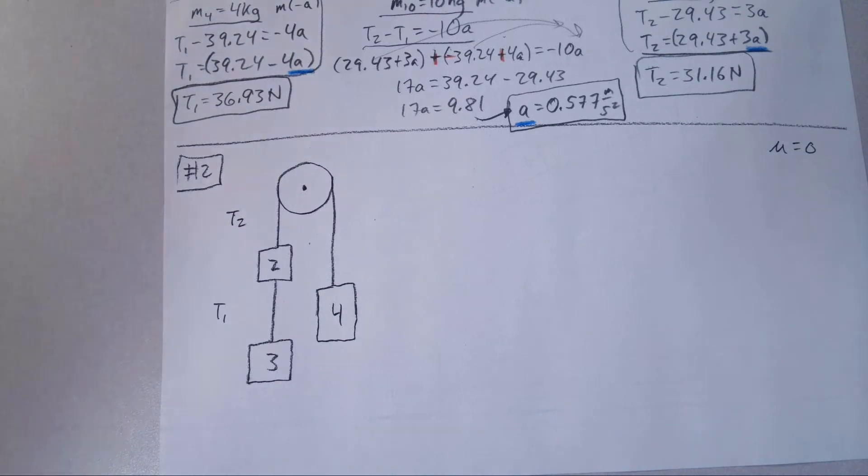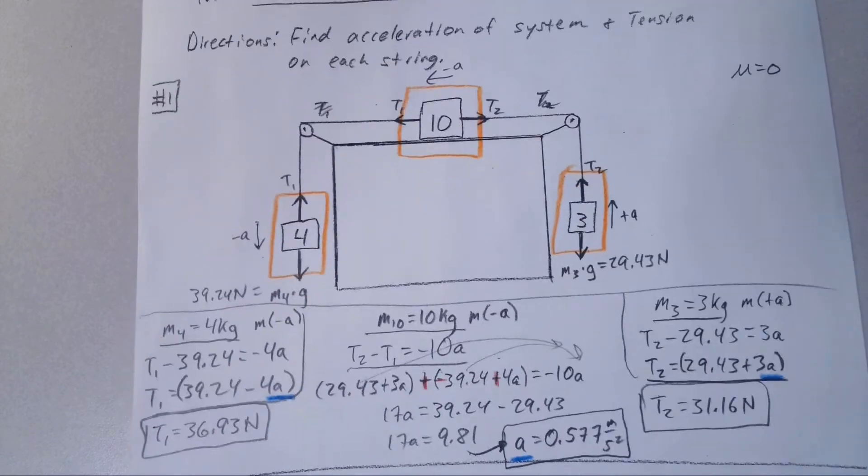Okay, welcome back. This is Mr. Dahlstrom on number two of worksheet number two. We just did the table pulley problem here.